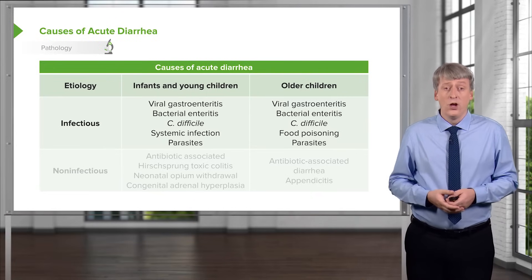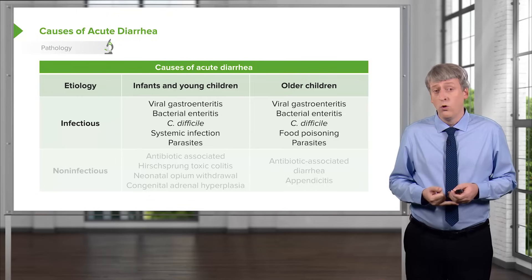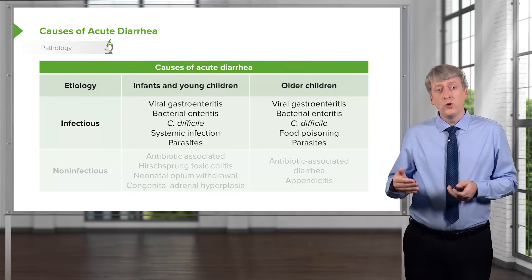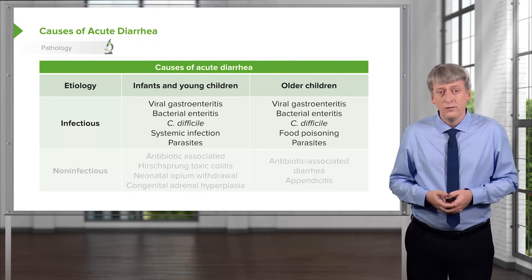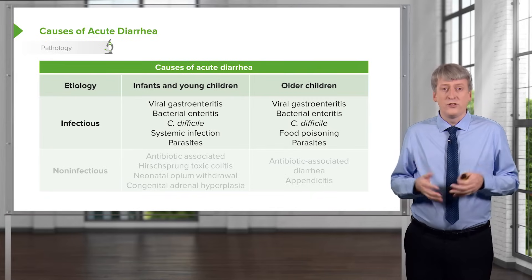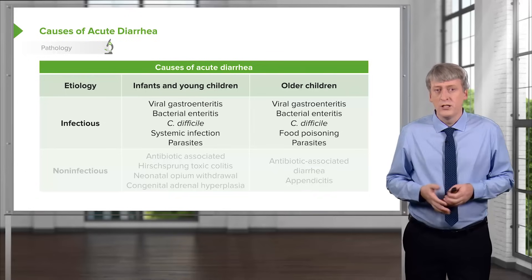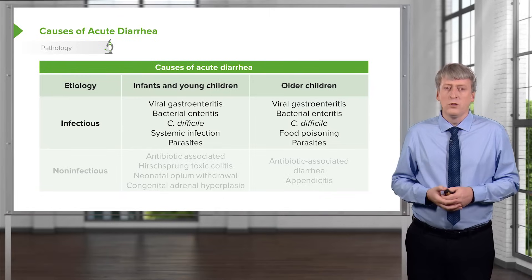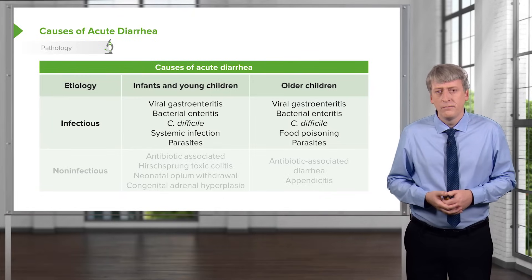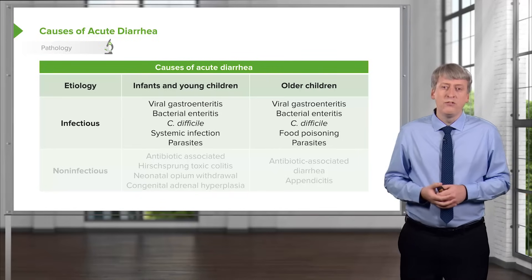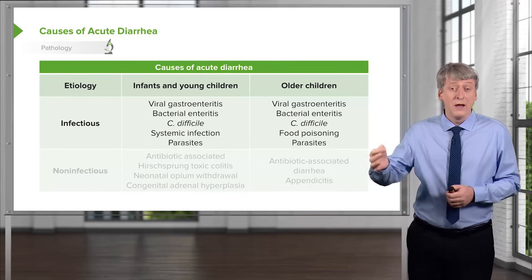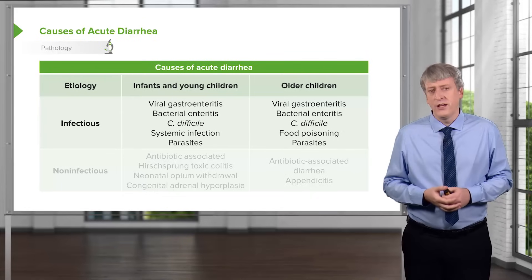Bacterial etiologies are not uncommon. We see Campylobacter, E. coli, Salmonella, Shigella, even Yersinia, and all of these can cause bloody stools. In patients who have been exposed to antibiotics, you may see C. difficile. There may be systemic infections causing acute diarrhea, especially in younger children. Parasites are possible, though more common in developing countries. With food poisoning, which is ingestion of a preformed toxin, patients more commonly have vomiting as well.